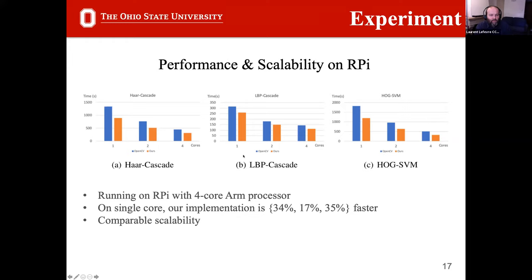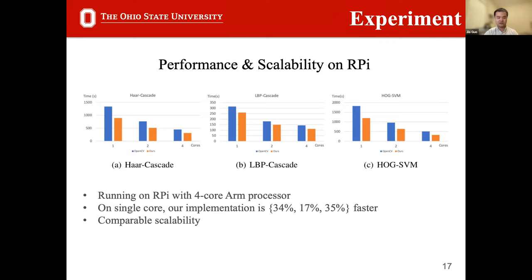The second question asks whether the authors have advanced on this topic since submitting to CCGrid 2020. Jia responds that they have explored more possibilities for optimizing execution in IoT environments, but the methodologies for these specific applications are well-established. The team has since moved toward incorporating deep learning approaches rather than continuing with classical feature selection algorithms.